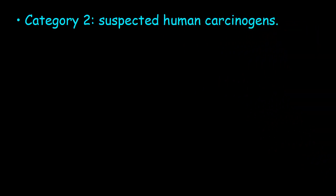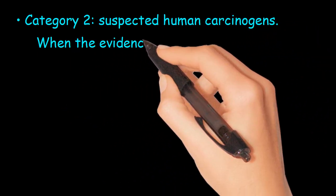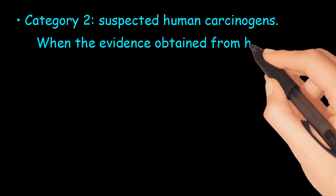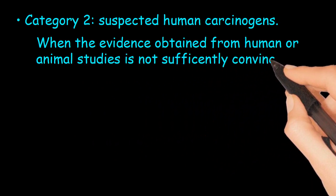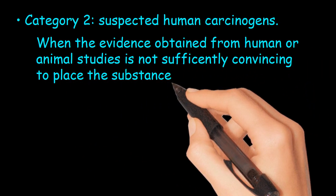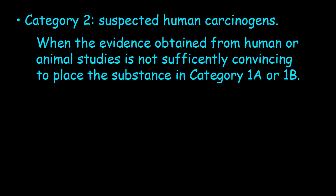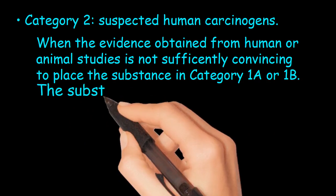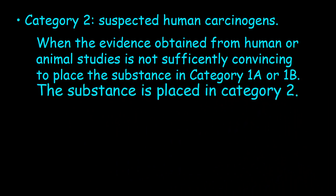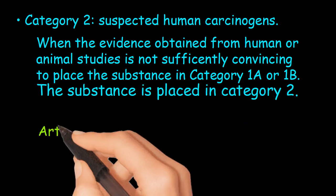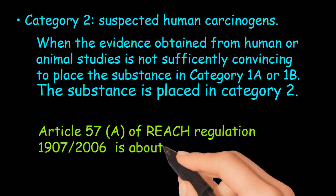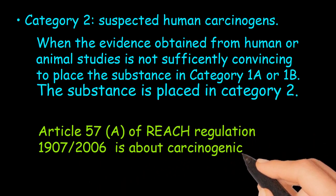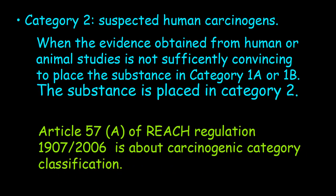Category 2: Suspected human carcinogens. When the evidence obtained from human or animal studies is not sufficiently convincing to place the substance in Category 1A or 1B, the substance is placed in Category 2. Article 57 of REACH Regulation 1907/2006 covers carcinogenic category classification.